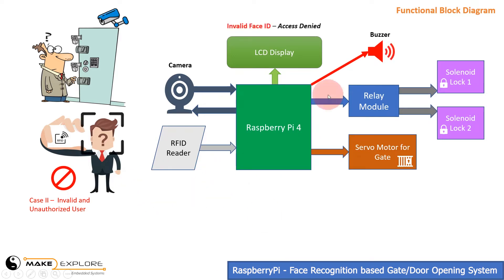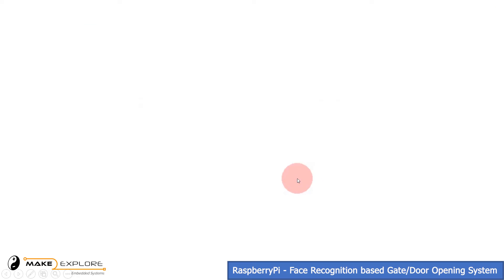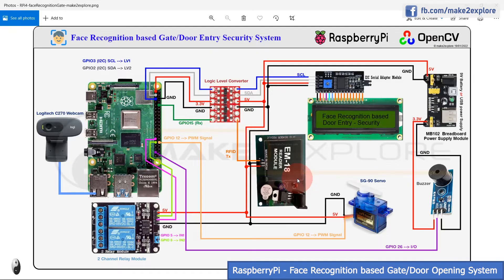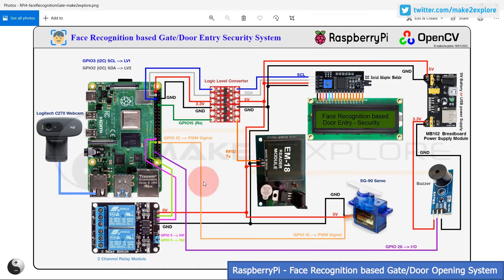So, this was all about the functional block diagram and theoretical working of the project. Now let's move to the hardware section of this project and see the schematic or circuit diagram. Here is the one. Let me give you a brief description of all the connections. All wiring connections are in color coding, so you can easily track them. You will get this schematic on our GitHub page.